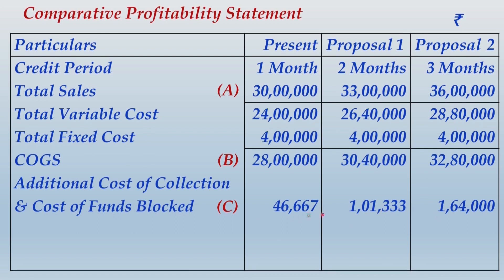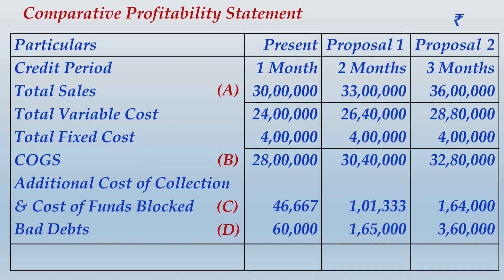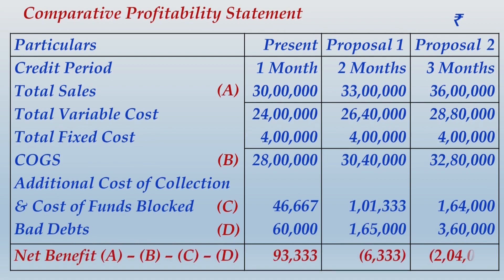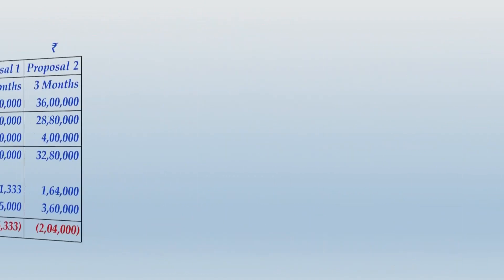Bad debts are 60,000, 1 lakh 65,000, and 3 lakh 60,000 for the three columns respectively. Net benefit (A minus B minus C minus D) shows a positive amount at present, but in both proposals the net benefit turns negative. Therefore, neither proposal should be implemented. The company should continue with its present policy of one month credit, as extension in credit is not advisable.